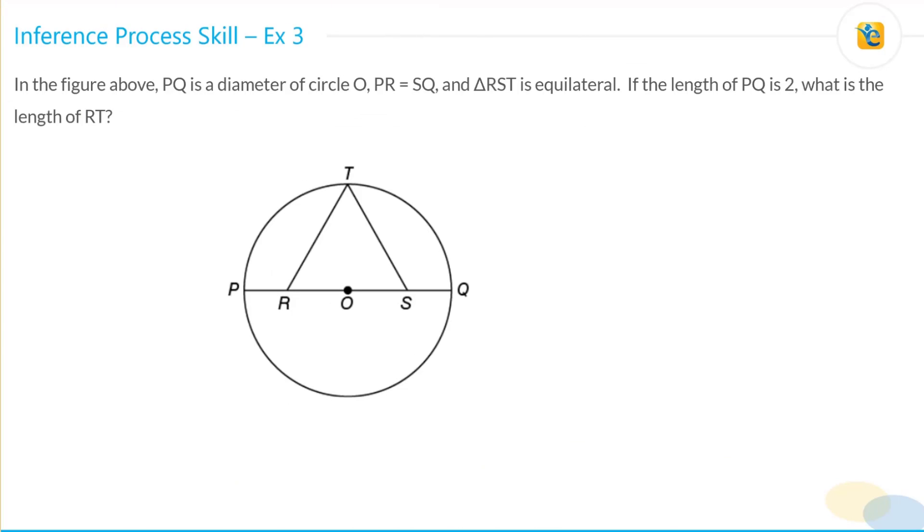Alright, so let's read the information in this question. In the figure, PQ is a diameter of circle O, which means OP is equal to OQ. Then we are given PR is equal to SQ. So let's shade this up over here. And triangle RST is equilateral. If the length of PQ is 2, what is the length of RT? We need to figure out the length of RT, and we know that RST is equilateral. So we need to really find the length of the side of the equilateral triangle.